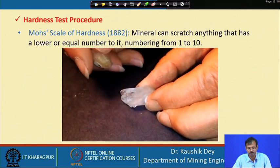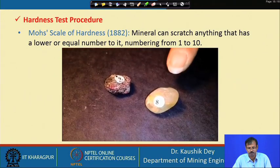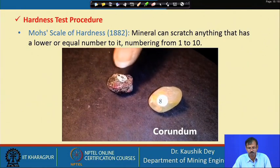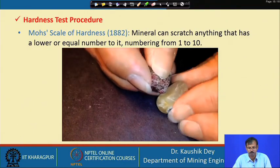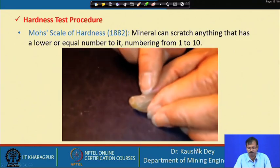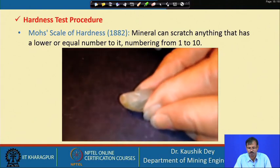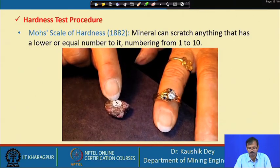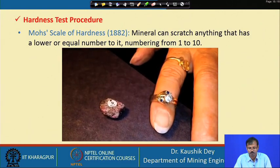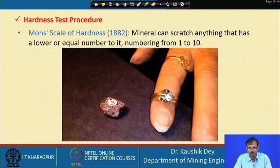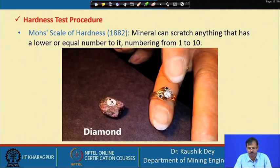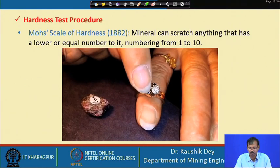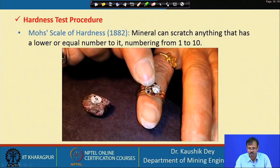As we get harder, we do not get as easy a scratch as we did before. Number 8 was topaz. Number 9 is called corundum, one of the hardest minerals, and it does a good job scratching topaz. Number 10, not included in the kit, is diamond. Diamond is the hardest mineral — if we could get the diamond edge to corundum, it would scratch it because diamond is the hardest mineral we have.